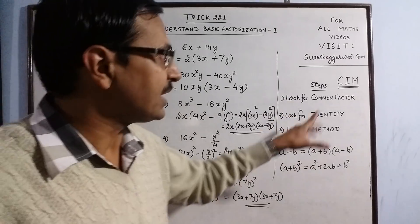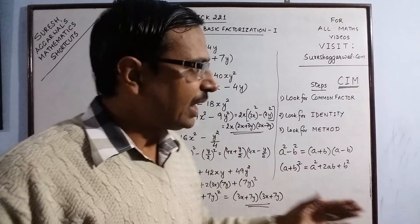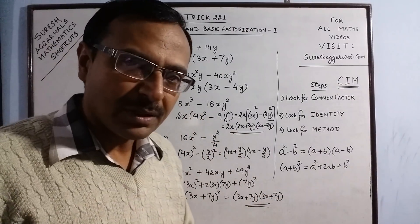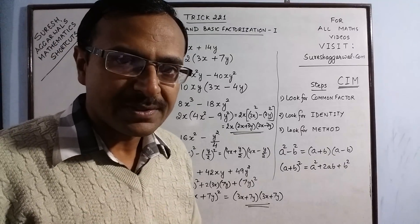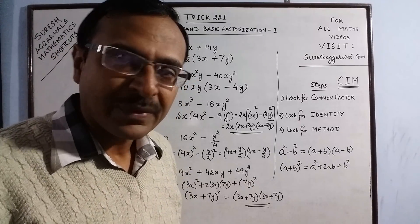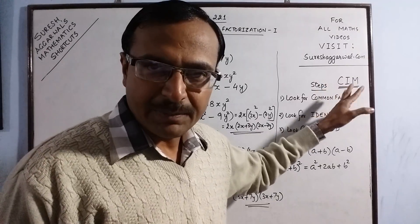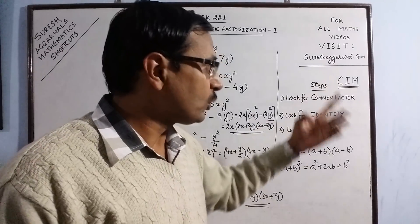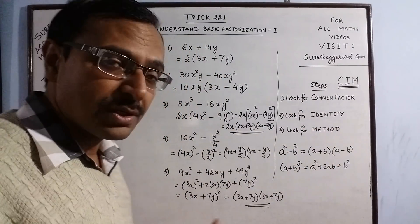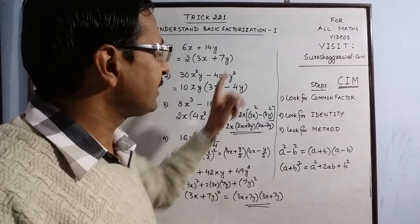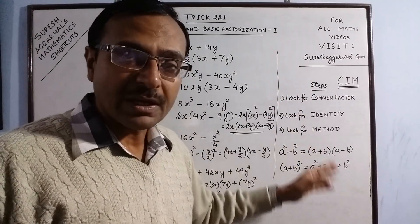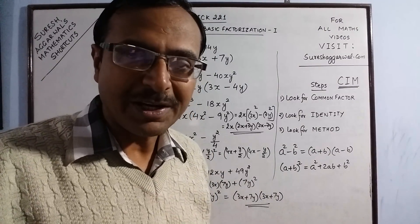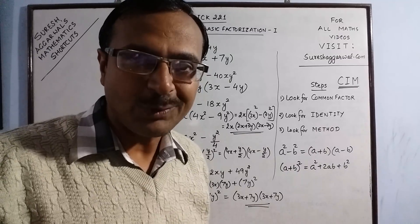Students, if you understand these three steps — C-I-M — and solve problems logically, you can do wonders in this important topic of algebra. Remember: C is looking for the common factor, I is looking for the identity, and M is looking for the method. I have not taken any question based on methods yet, so in subsequent videos on factorization I will take up more challenging questions. Until then, keep viewing, keep learning mathematics, and share and subscribe the channel if you like it.